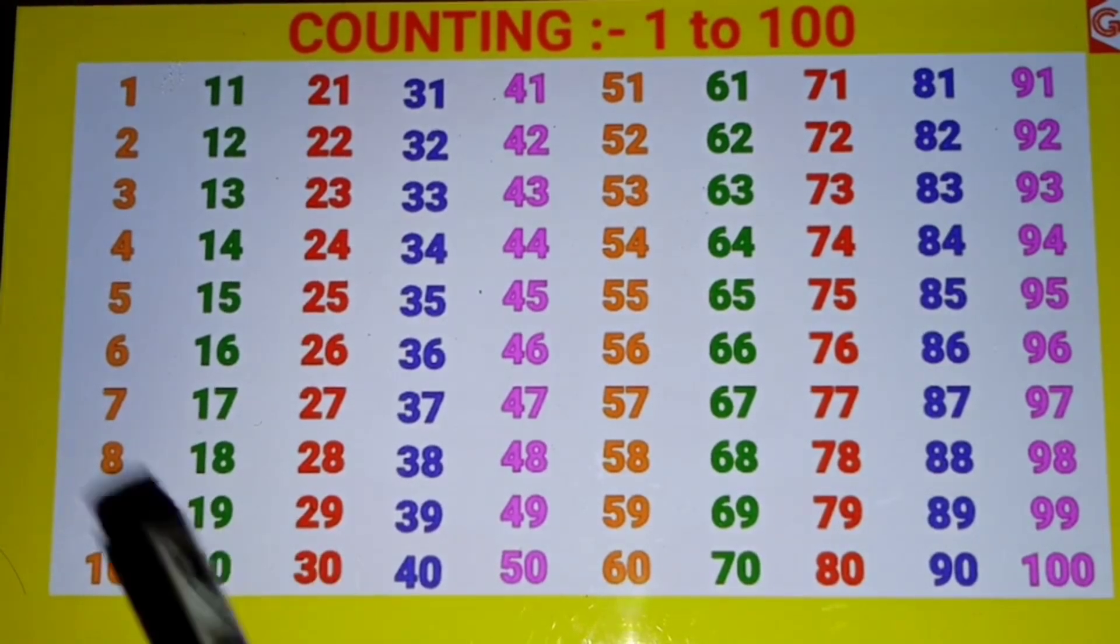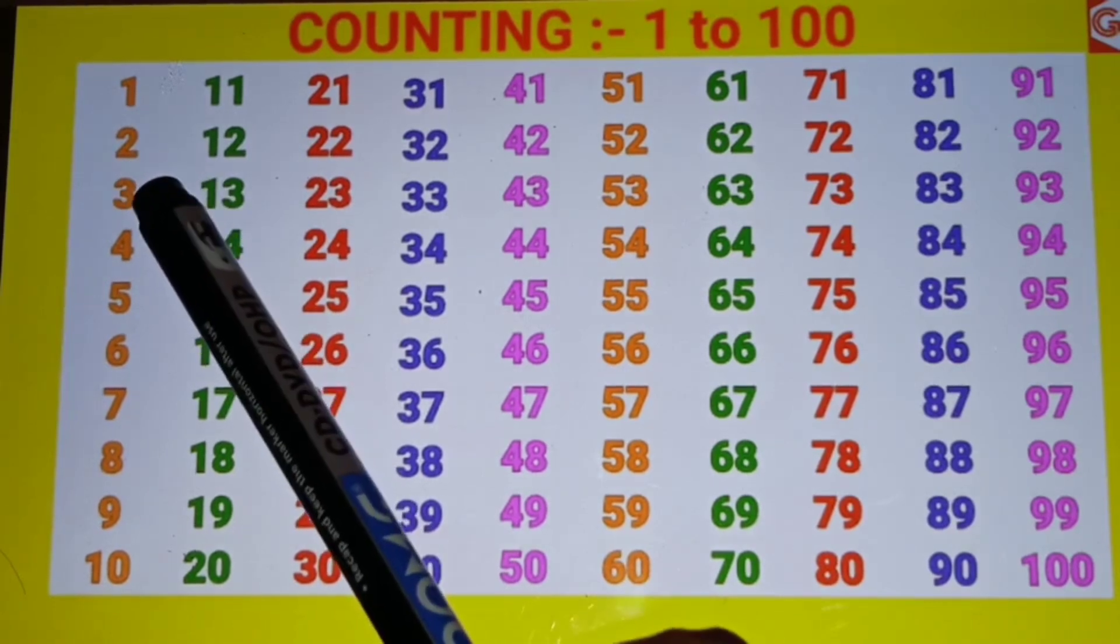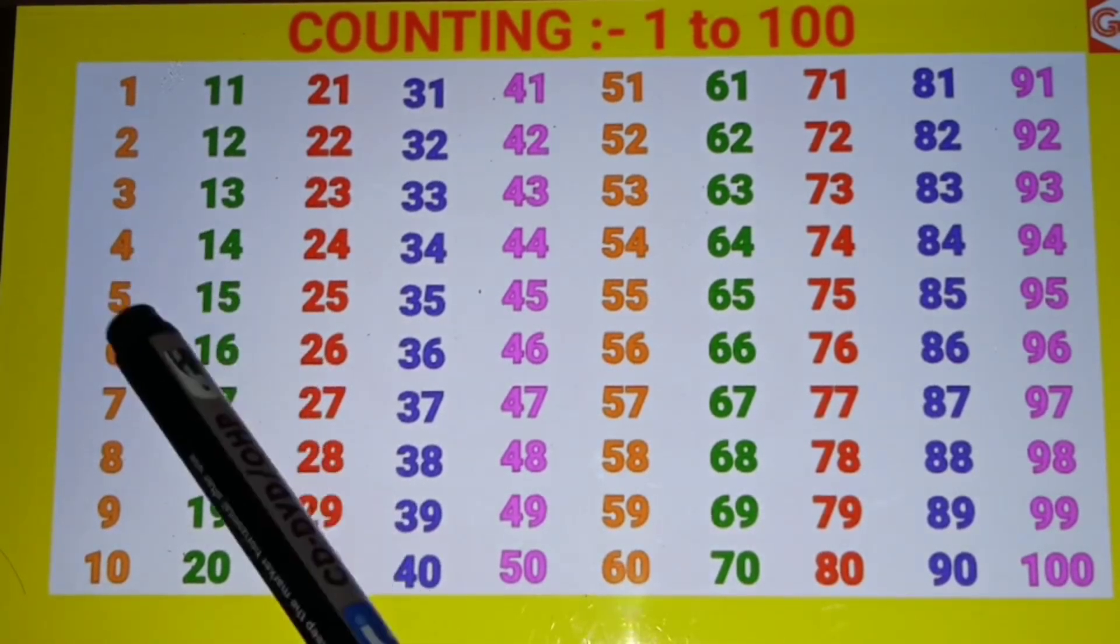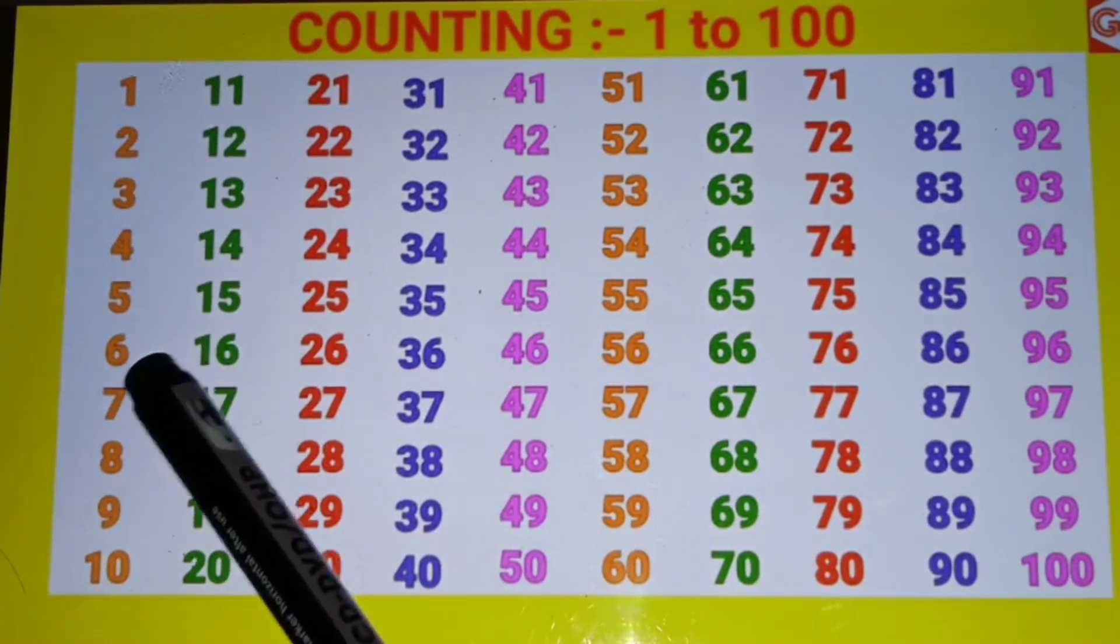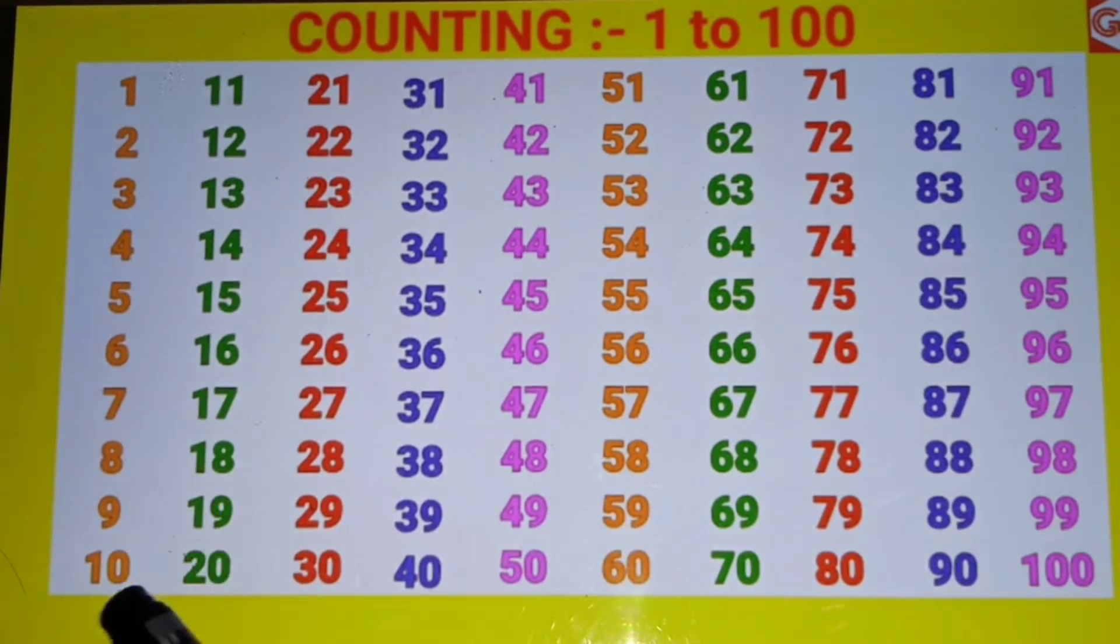1 to 100 counting in English. 1, 2, 3, 4, 5, 6, 7, 8, 9, 10.